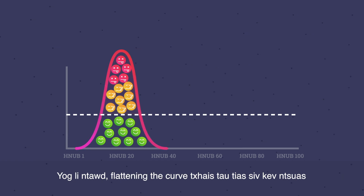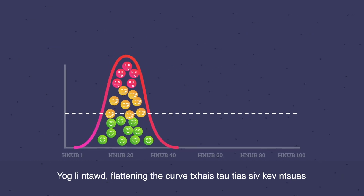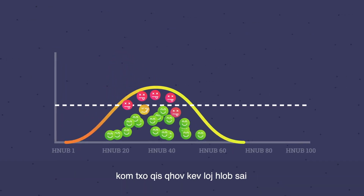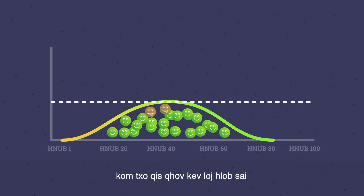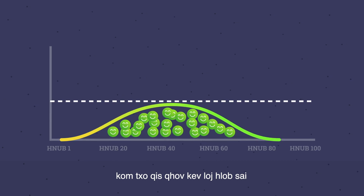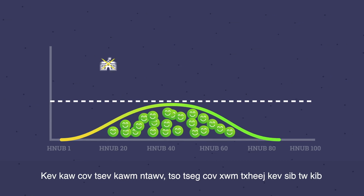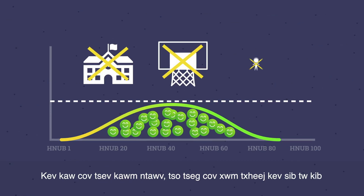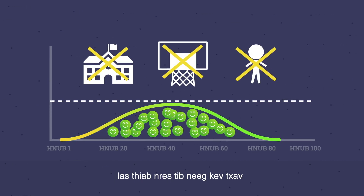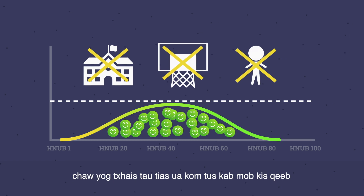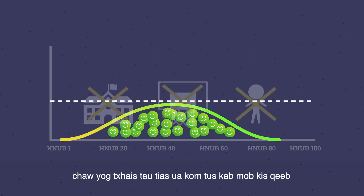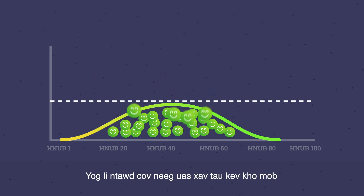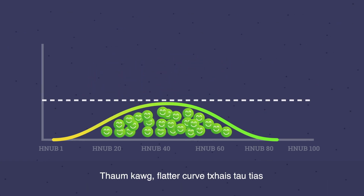So, flattening the curve means using extreme measures to slow this exponential growth. Closing schools, cancelling sport events, and stopping movement of people is all meant to slow the infection rate so those who need care can get it.